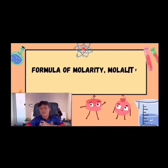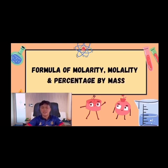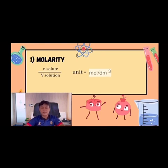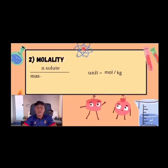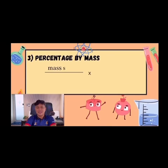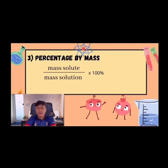Next, we talk about our three formulas, which is molarity, molality, and percentage by mass. First, molarity. The formula of molarity is number of mol of solute divided by volume of solution, and the unit of molarity is mol per dm³. Next, for the molality, the formula of molality is number of mol of solute divided by mass of solvent, and the unit of molality is mol per kg. Last but not least, the percentage by mass. The formula of percentage by mass is mass of solute divided by mass of solution, times 100.